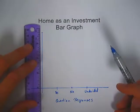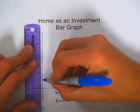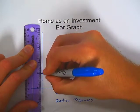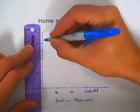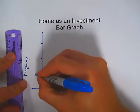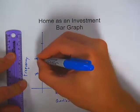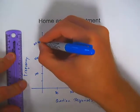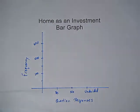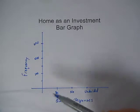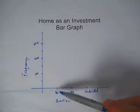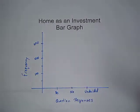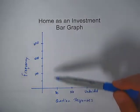I'll use my ruler to get equal spacing and draw in tick marks, making each about a half inch apart. I'll count by hundreds but label every 200. Now I need to draw bars for yes, no, and undecided, centered on each specific response. The yes bar is going to go all the way up to 540.